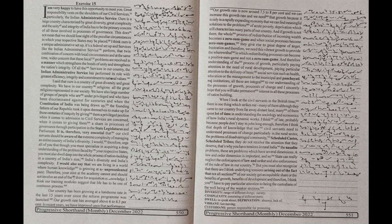The Naxalite problem. These are problems which have several dimensions. A law and order dimension is important and no state can really neglect the enforcement of law and order and also enforcement of the rule of law in our country. But you must also recognize that there are underlying tensions arising out of the fact that not all sections of our society get an equitable share of the benefit of growth, benefits of development and therefore you have to pay particular attention to being the custodians of the well-being of the weaker sections.